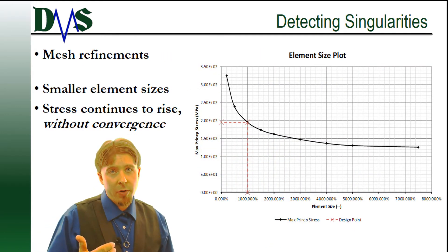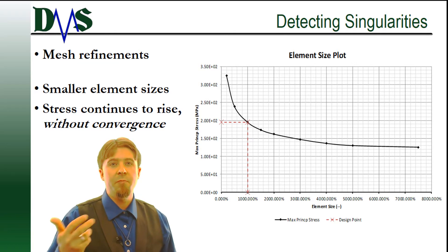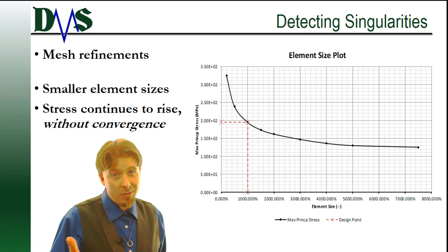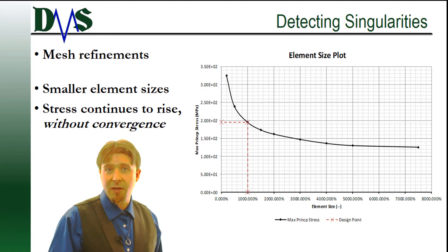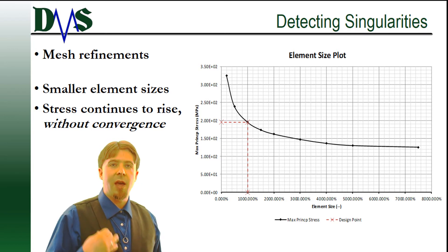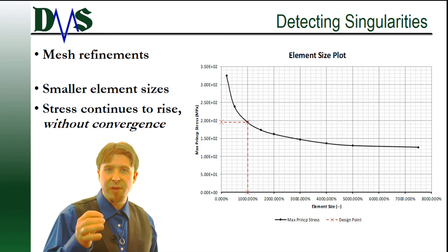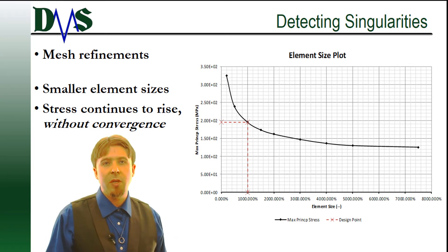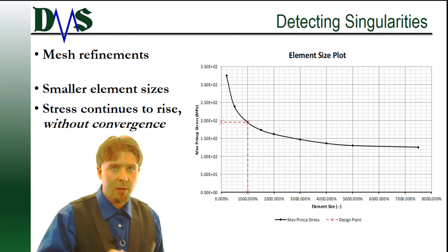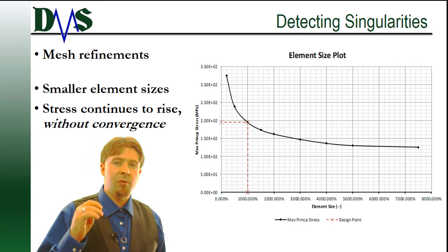How do you detect a singularity? Now remember, FEA singularities occur in places that also would create stress concentrations, so they could be one or the other. The best way to detect a singularity is to study how it behaves with successive mesh refinements.